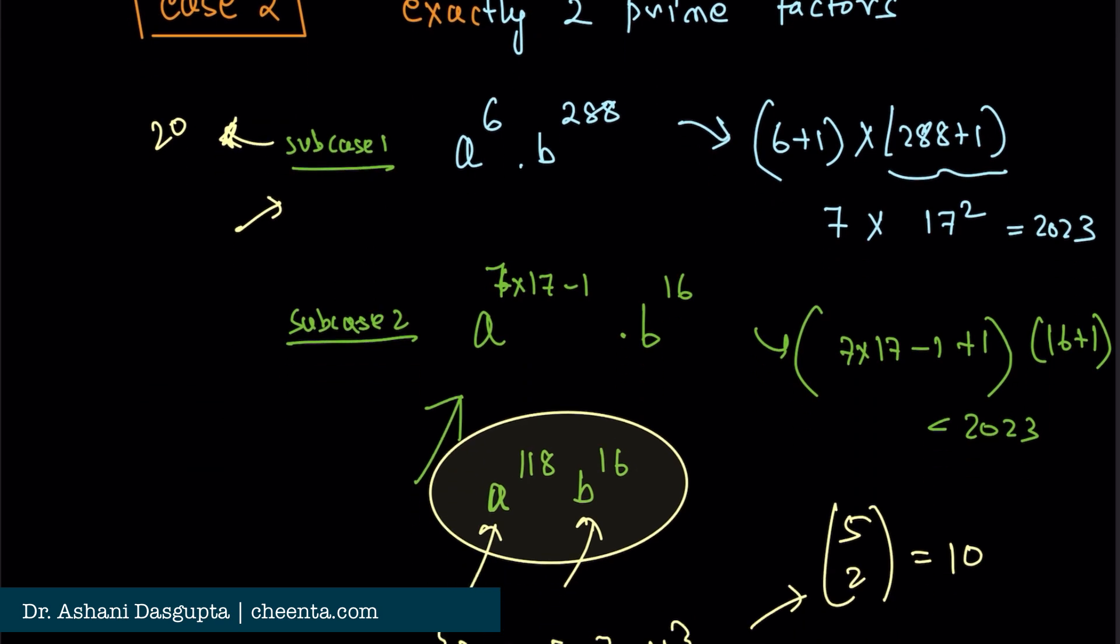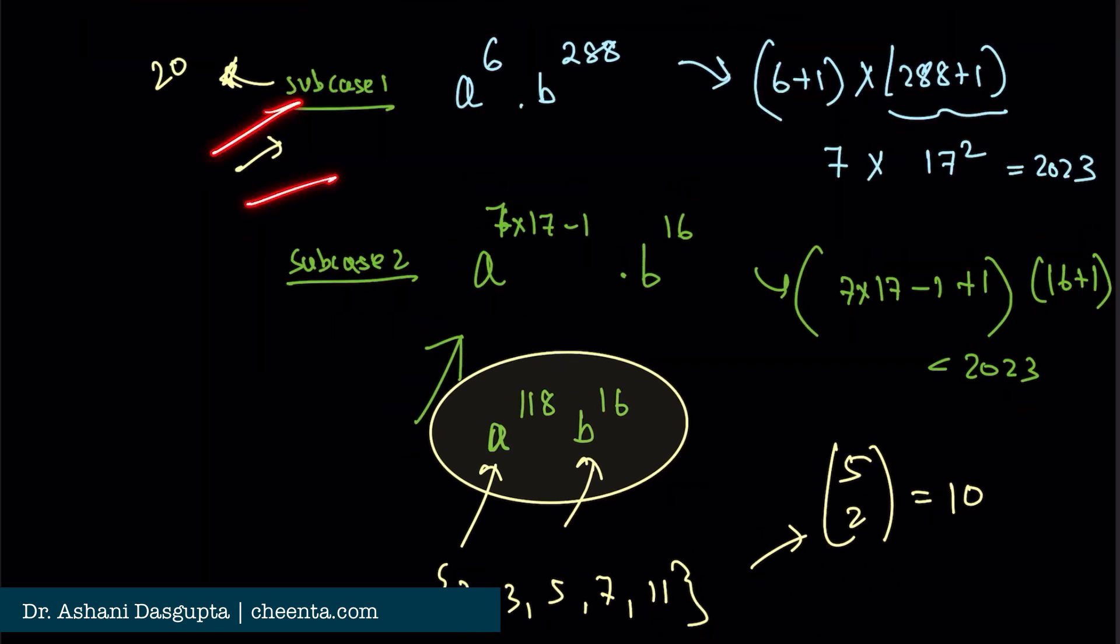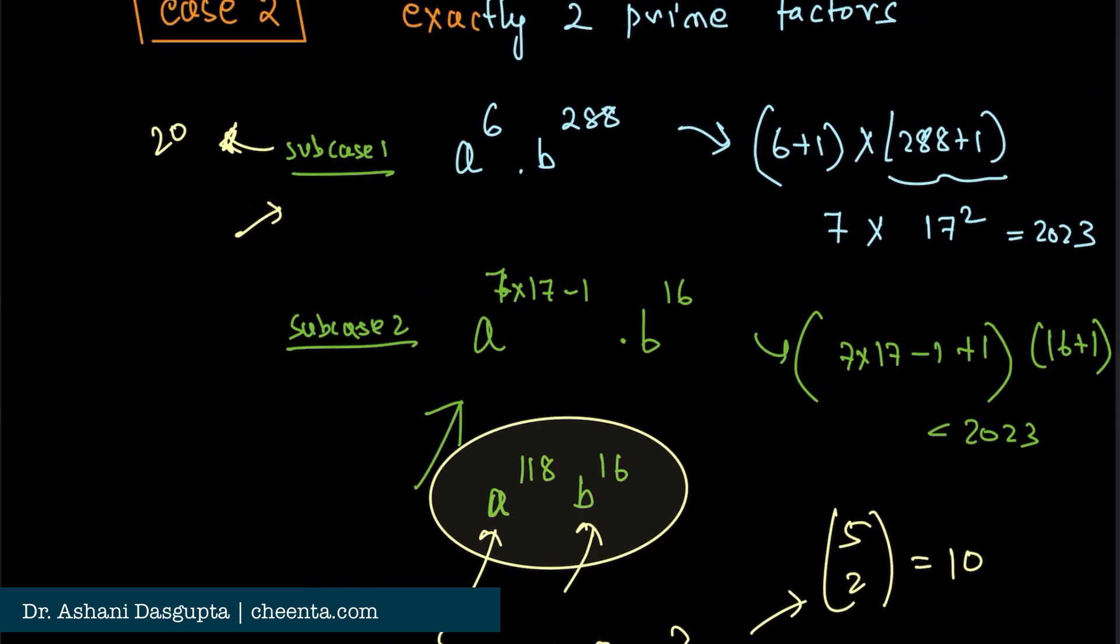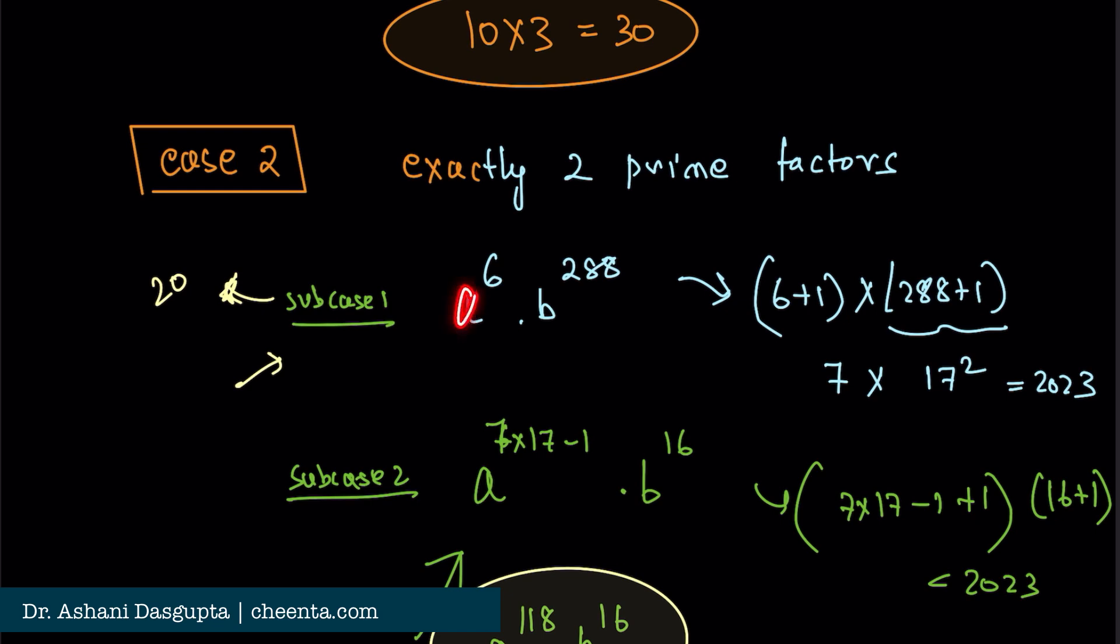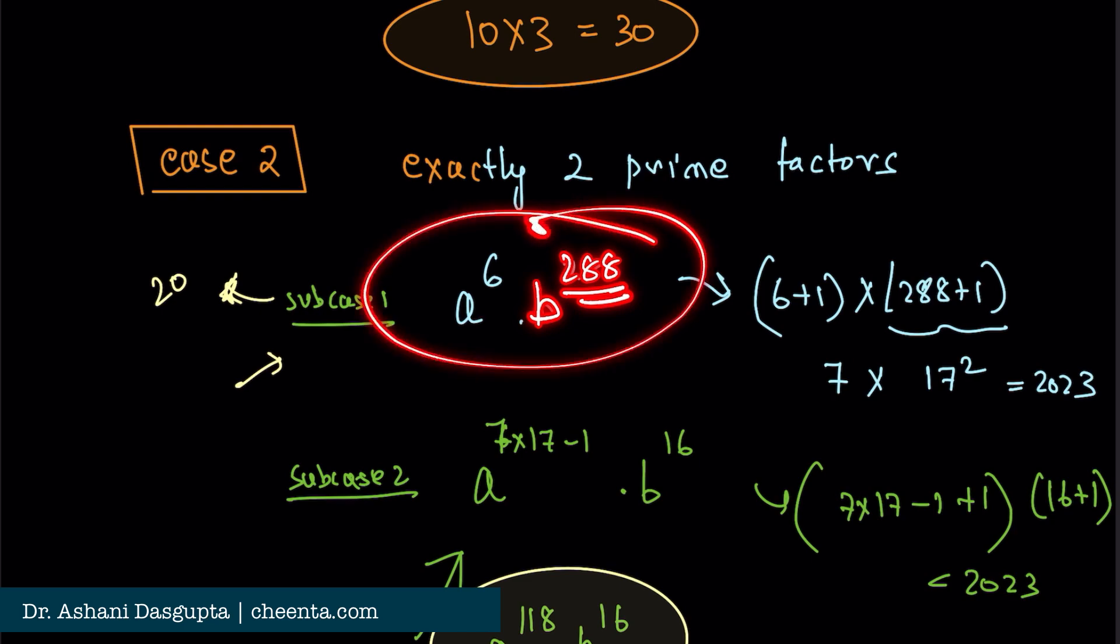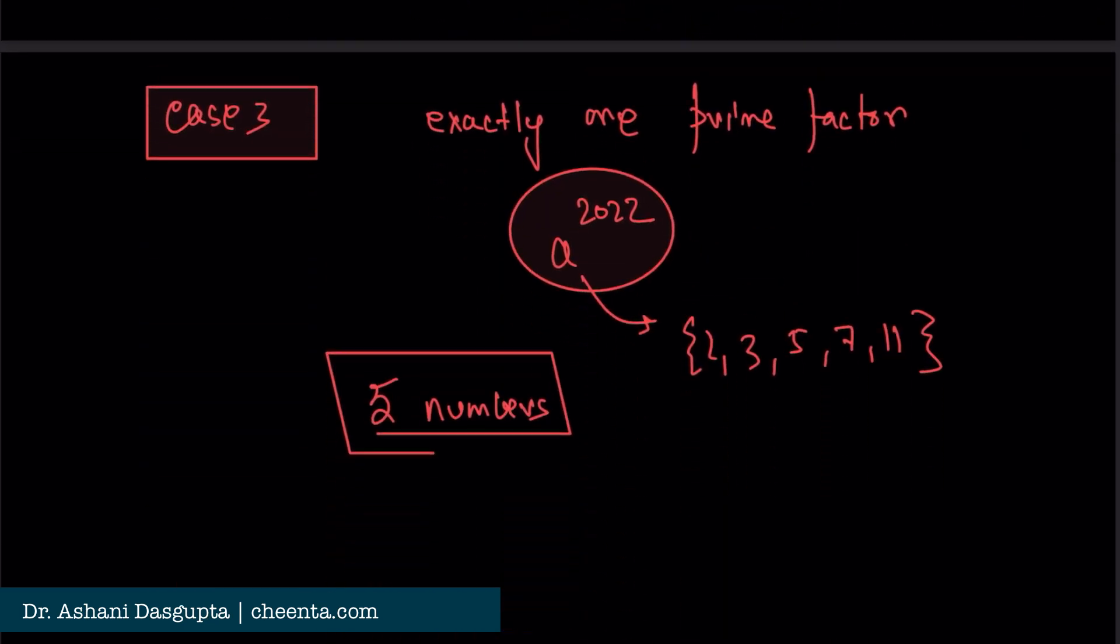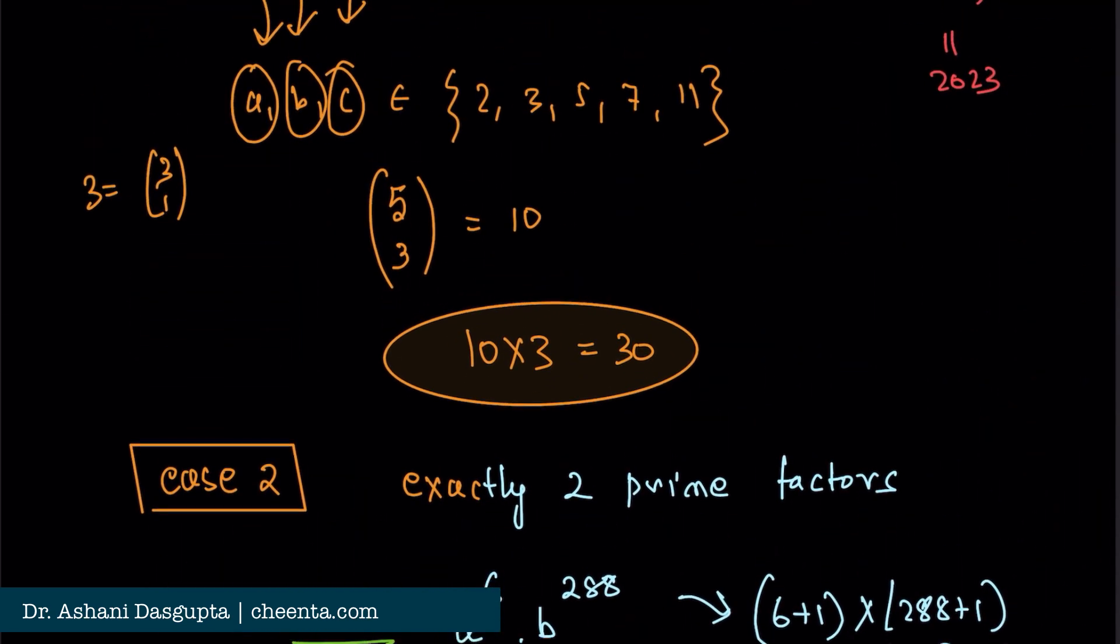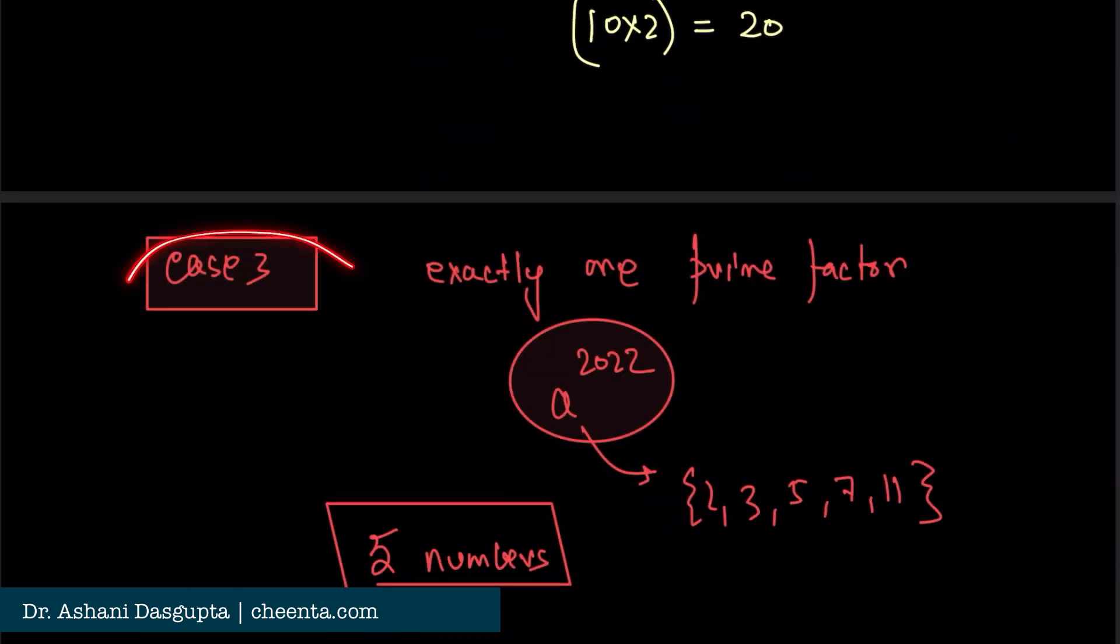Now, what happens if I choose from subcase 1 or Case 3? In subcase 1, notice that the power of a is a multiple of 3, and the power of b is also a multiple of 3. So these are perfect cubes. Similarly, in Case 3, the power of a is a multiple of 3 (2022 is a multiple of 3). So this is a perfect cube. If we choose any number from subcase 1 or Case 3, then we get a perfect cube.